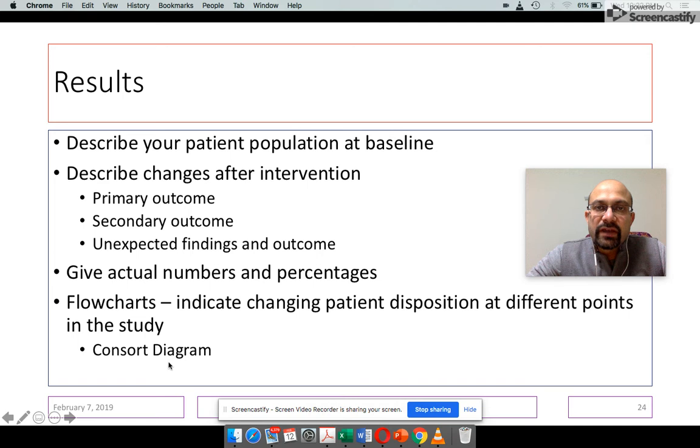So if you google the consort diagram, this is an easy template that you can find in which you can fill in the numbers in your particular study on a previously existing well-established and well-accepted template from the consort guidelines. The consort guidelines are the guidelines which give you ways how a randomized trial should be reported and so you should be using these more often when you are writing.